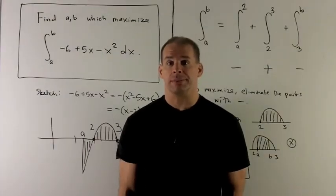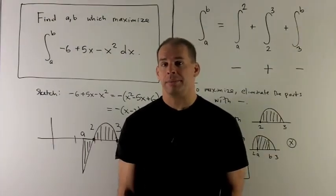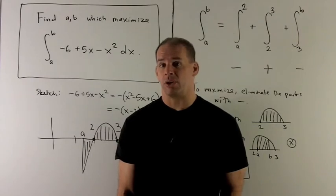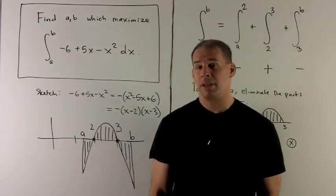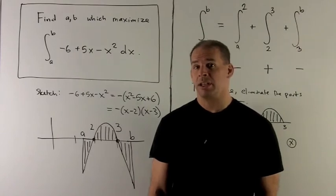So our problem is, find a and b such that the definite integral from a to b of minus 6 plus 5x minus x squared dx is maximized.